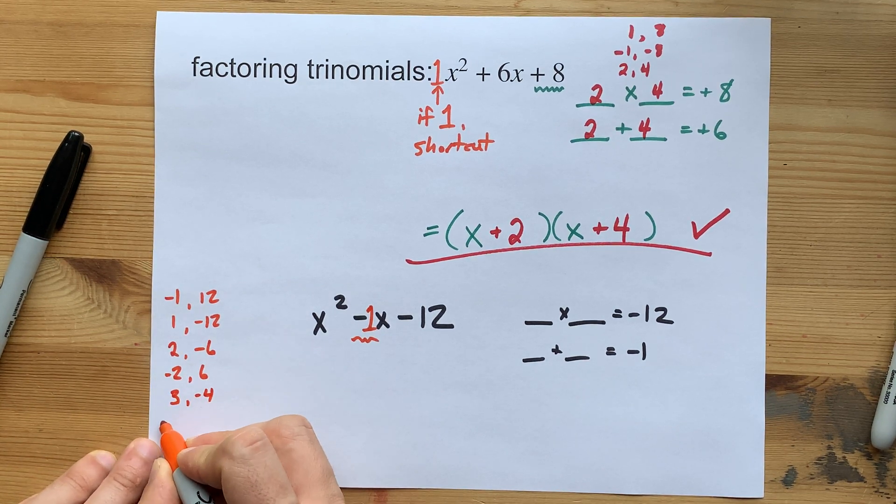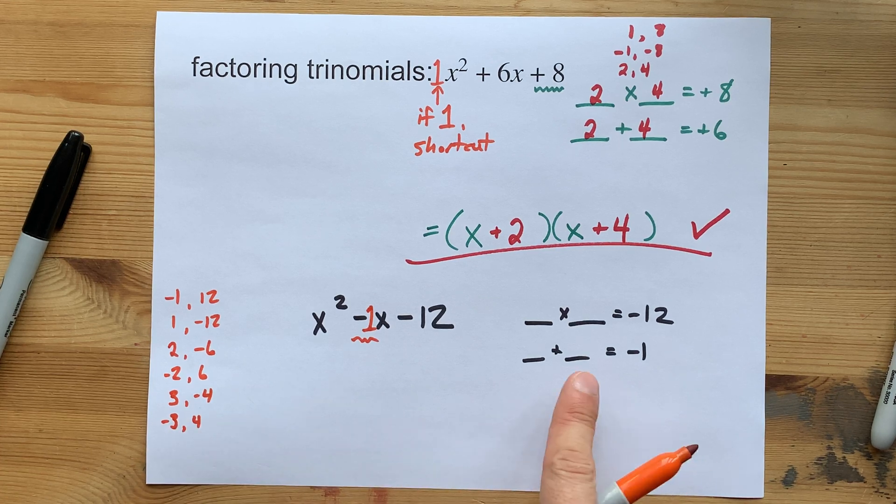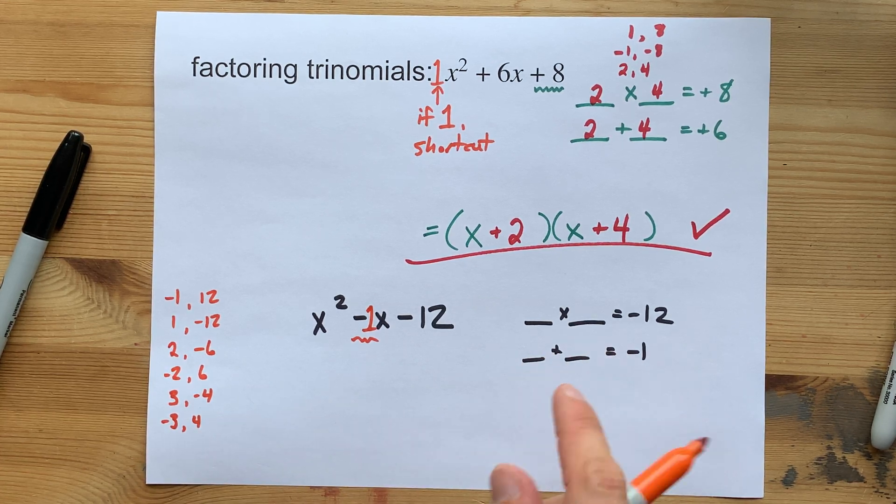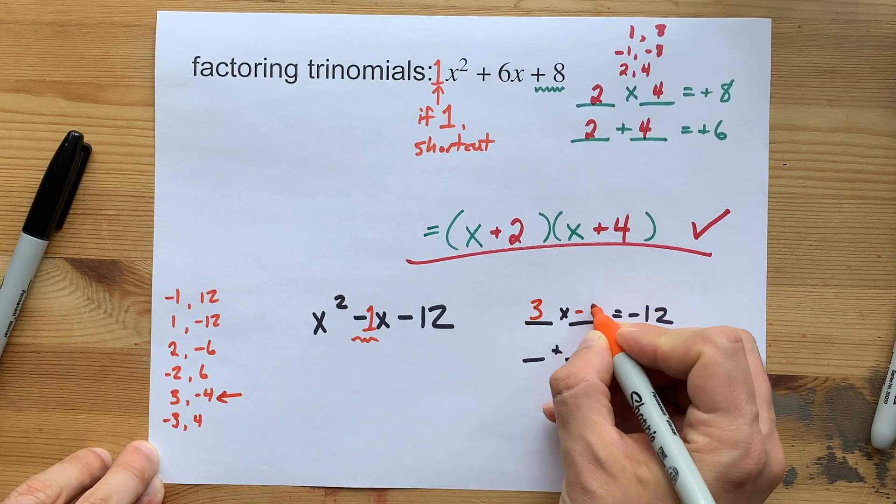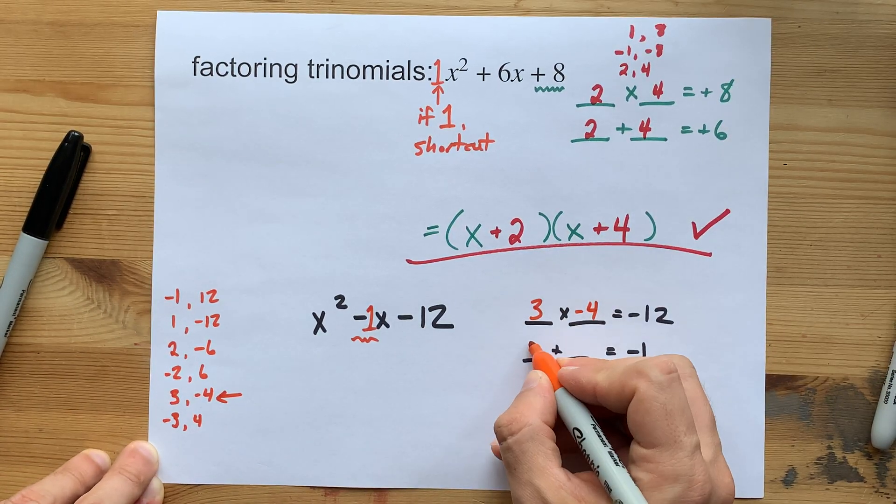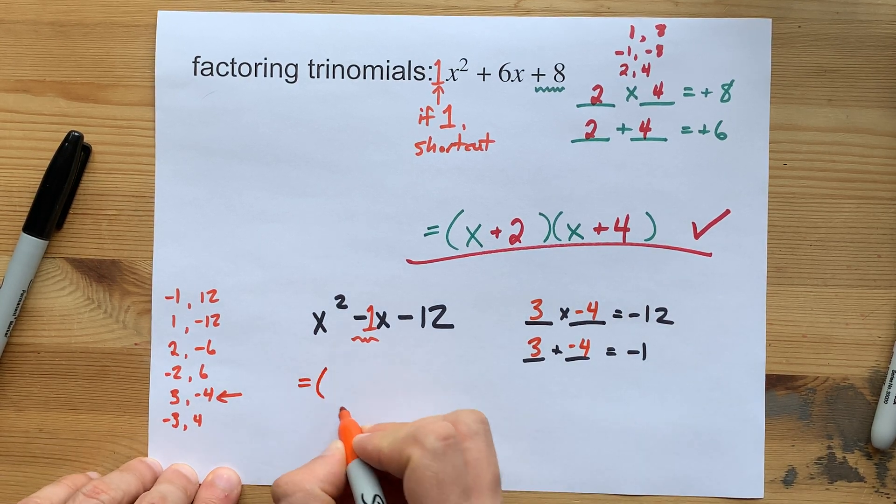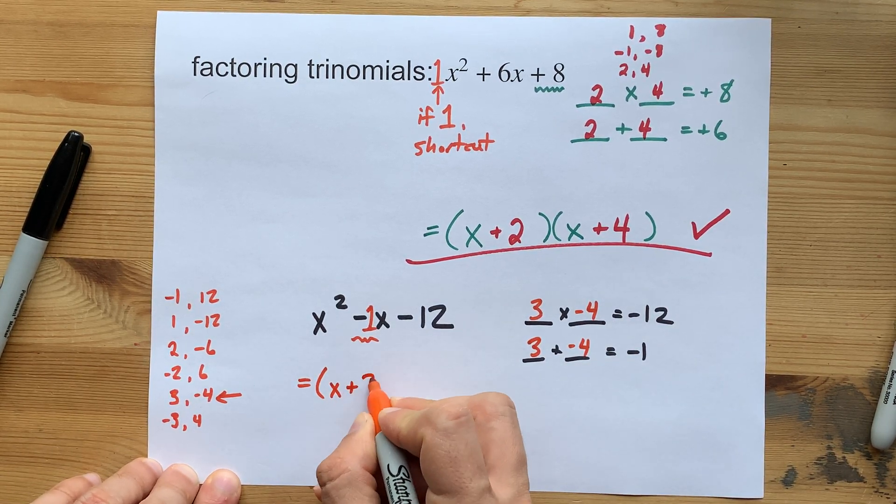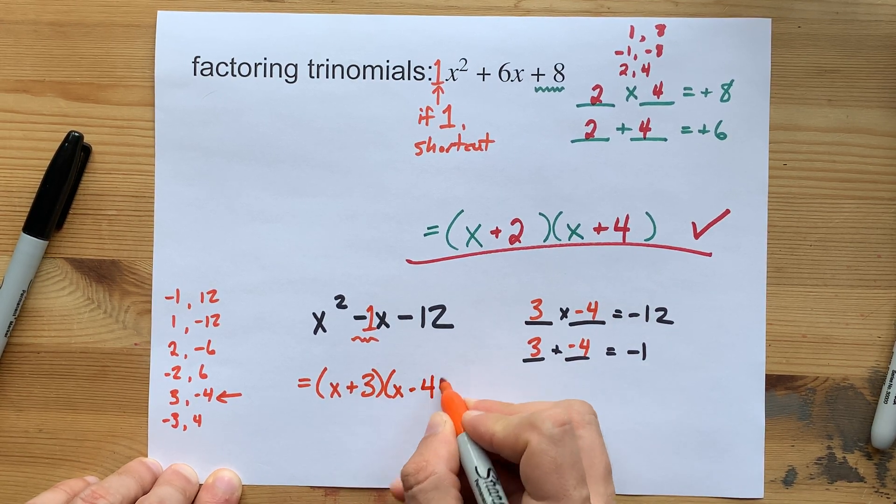3 and negative 4. Negative 3 and positive 4. Which of those pairs will add to negative 1? It's going to be this one. 3 times negative 4 is negative 12. 3 plus negative 4 is negative 1. So my final answer is x plus 3 and x minus 4.